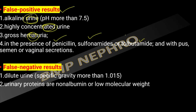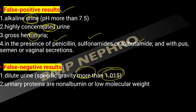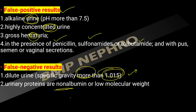If the urine is very dilute — with a specific gravity less than 1.015 — the dipstick may give a false negative value. This does not mean the patient doesn't have proteinuria; it needs to be confirmed with quantification. Very dilute samples reduce the sensitivity of the dipstick assay.